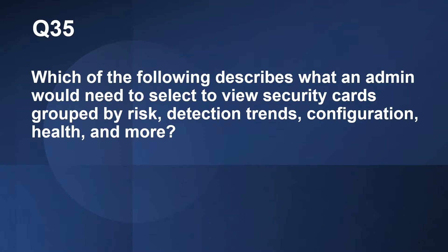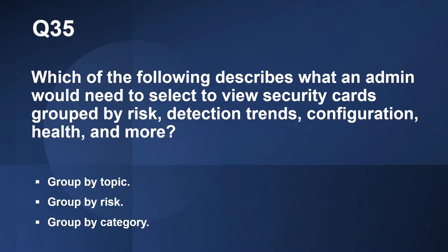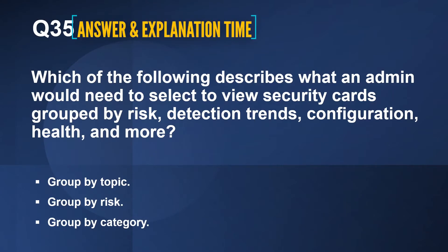Question number 35: Which of the following describes what an admin would need to select to view security cards grouped by risk, detection trends, configuration health, and more? The options are Group by Topic, Group by Category. The correct answer is Group by Topic. You would use this filter to view security cards grouped by risk, detection trends, configuration health, and more.